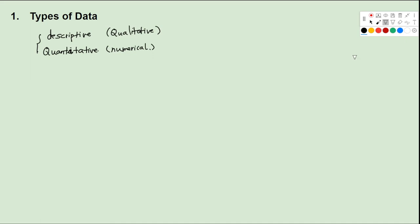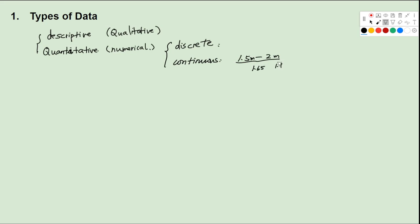For numerical data, there are two different types as well. The first one is called discrete, and the second one is called continuous. If we want to record the height of students in the class, the height will be continuous data. Because the height is generally between 1.5 to 2 meters, any number within this range can be reached — you may have a student whose height is 1.65, 1.71, or even 1.706.